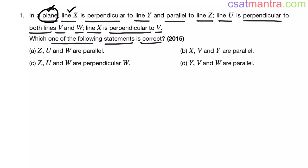Line x is perpendicular to line y. This is line x. This is line y. Line x is perpendicular to line y. Perpendicular means 90 degrees. This is 90 degrees.